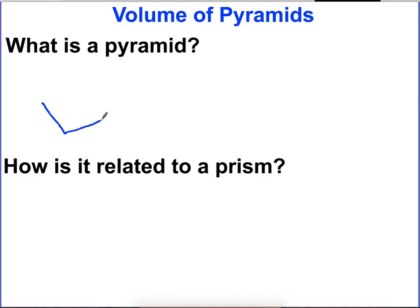So what is a pyramid? A pyramid has a base. It could be a square base, could be a triangle base, could even be a hexagon base or an octagon base.